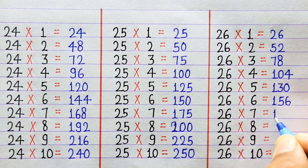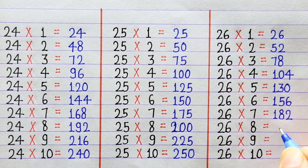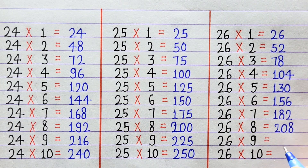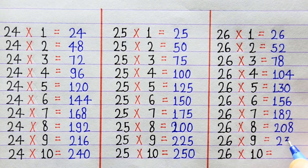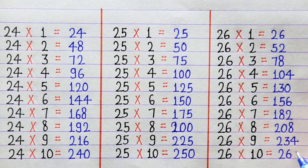26×7=182, 26×8=208, 26×9=234, 26×10=260.